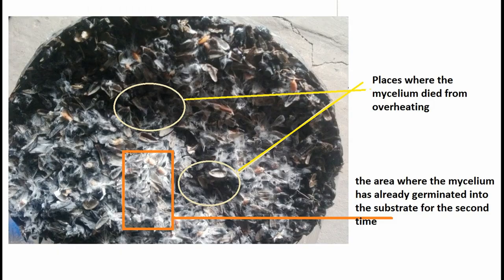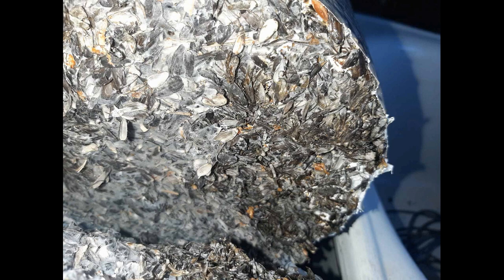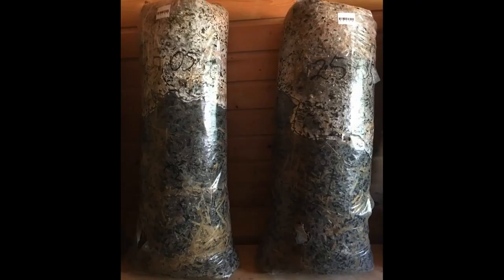At what temperature the mycelium dies depends on the conditions in the room and the strain. At 36 degrees in the center of the block for more than a day, the mycelium dies in the center, but then it can regrow. Some strains survive even a short-term increase in temperature up to 40 degrees. But in most cases, if the substrate continues to warm up, the hyphae of the mycelium die off even at the periphery and the substrate may turn black completely.